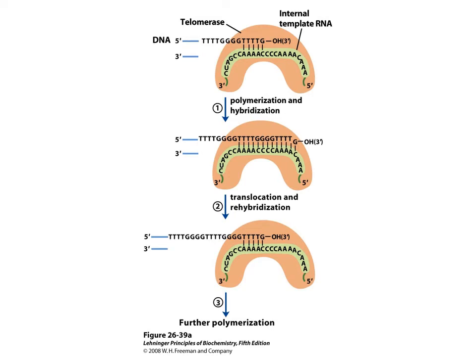A key question is how the ends of linear DNA are replicated. In somatic cells, the ends of linear DNA cannot be replicated because the replication machinery has no place to bind at the very terminus. This problem does not exist with circular DNA. As a result, the ends of linear DNA are shortened with each round of replication and cell division.